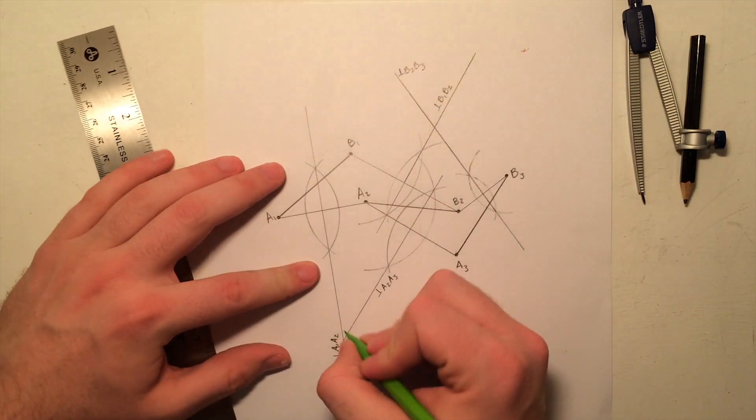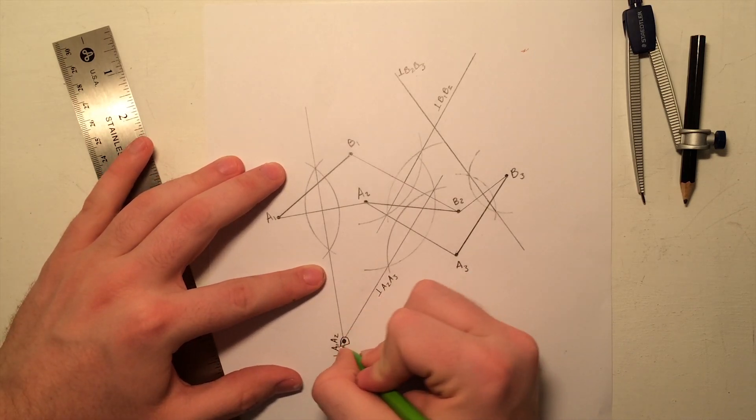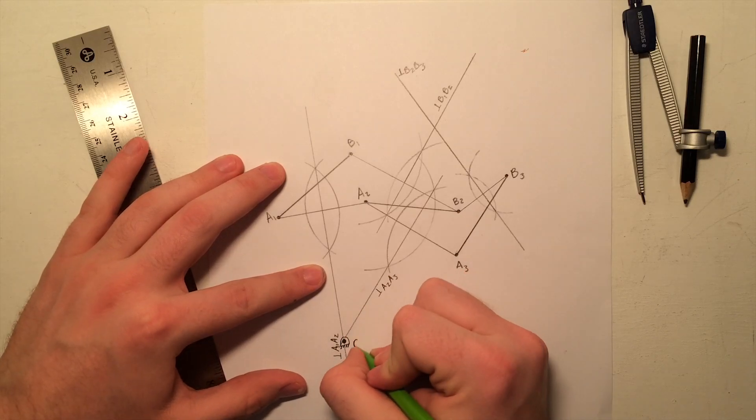The first ground joint is located at the intersection of the A1, A2 and A2, A3 perpendicular bisectors, and is labeled O2.